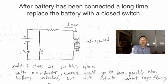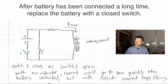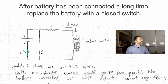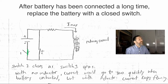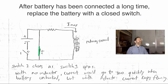After the switch has been closed a long time, here's what we do. We replace the battery with a switch. So what we'll do is we'll open this switch right there at the same instant that we close that switch. First this switch was closed, I get up to some maximum value of I.